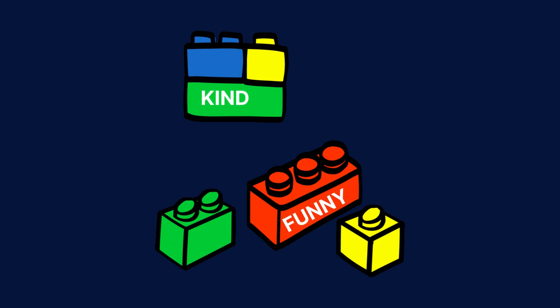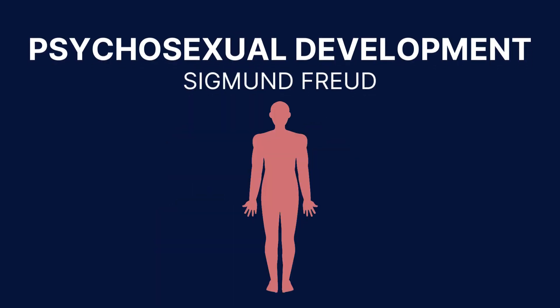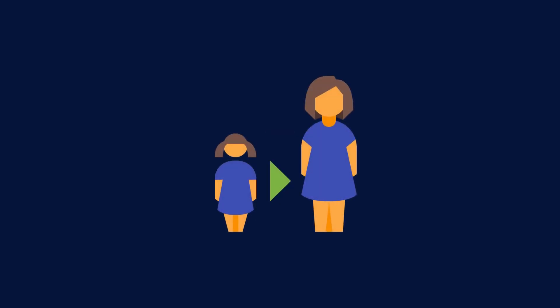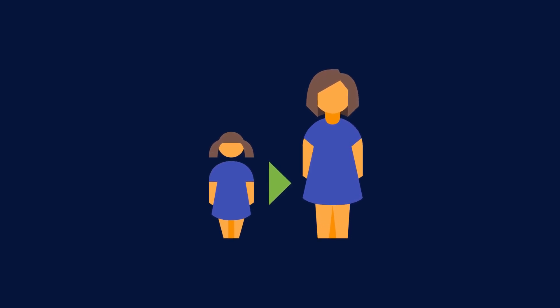The final stage is integrity vs. despair. Successfully resolving each stage's challenge leads to the development of personality traits and attitudes that influence an individual's behaviour and interactions with the world. Sigmund Freud's psychosexual development theory proposes that human development occurs in five distinct stages, each focusing on a specific erogenous zone, with development influenced by how individuals resolve the conflicts specific to each stage.